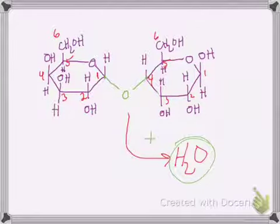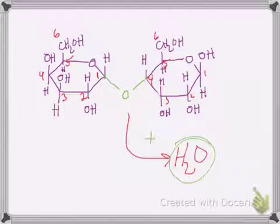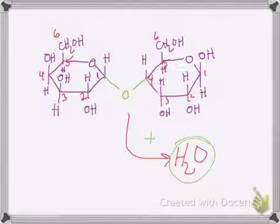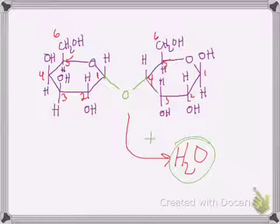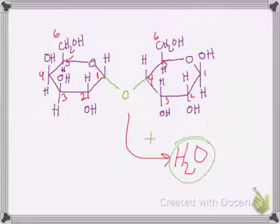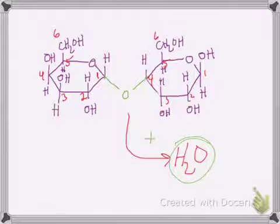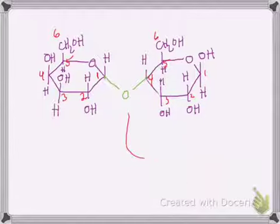It doesn't matter which carbon you use on either sugar to connect together, because each carbon has a hydroxyl group attached to it. The only one that wouldn't work is carbon five, because it doesn't have a hydroxyl group directly attached to it. Any other carbons and hydroxyl groups would work. When we connect them together, we have to distinguish which ones were connected, and so now we're going to name these bonds.